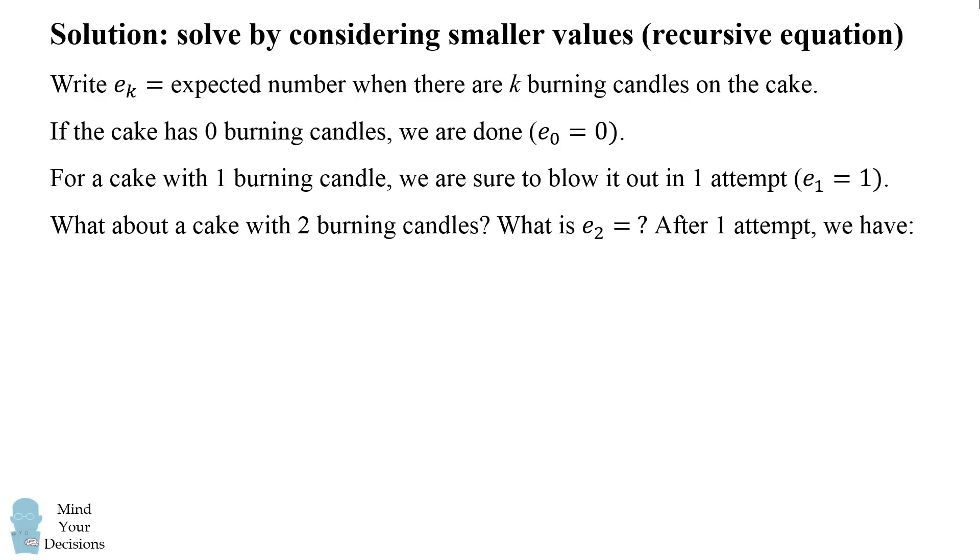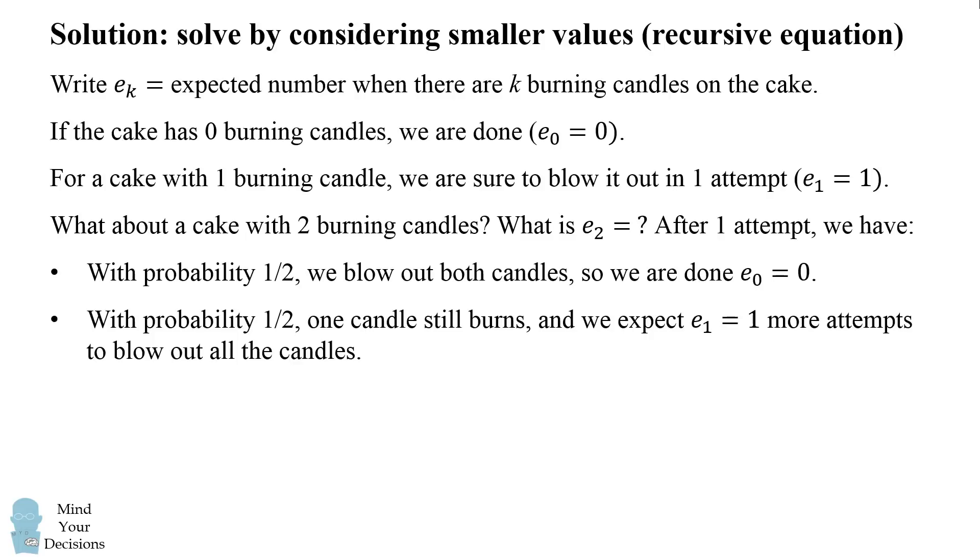Now, what about a cake with two burning candles? What is e_2? So after one attempt, we have a couple of possibilities. With probability 1 half, we blow out both candles, so we are done, e_0 equals 0. But with probability 1 half, one candle still burns. And we expect e_1, which equals 1, more attempts to blow out all of the candles. We can combine these into a simple equation, e_2 equals 1 plus 1 half times the quantity e_0 plus e_1. We can substitute in the values for e_0 and e_1, and we get e_2 is equal to 3 halves.